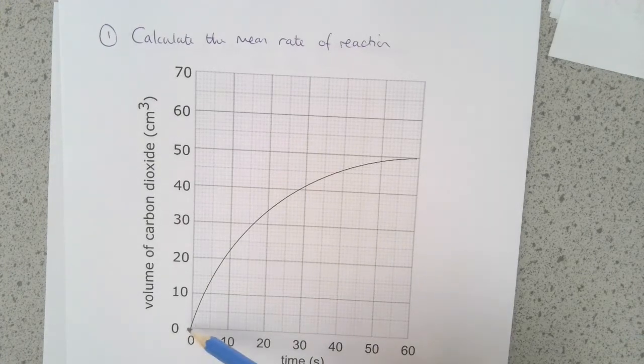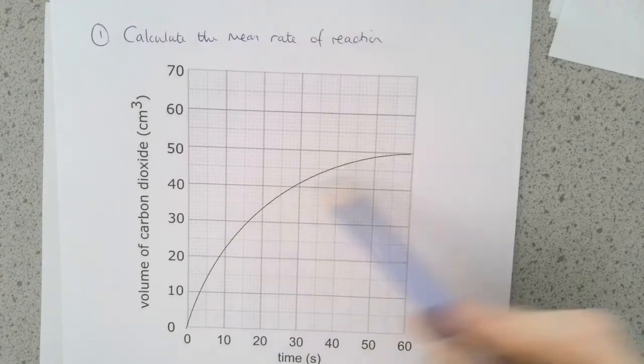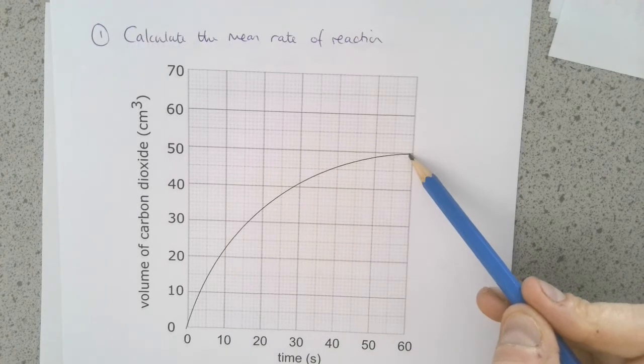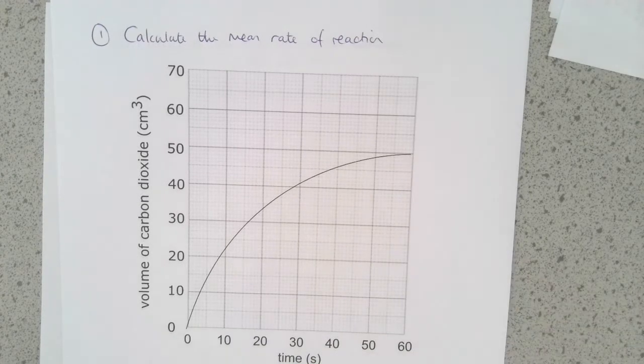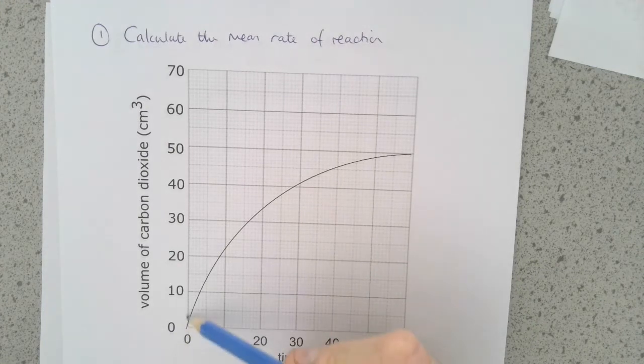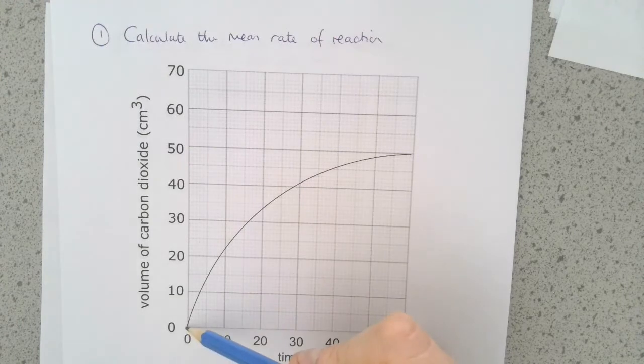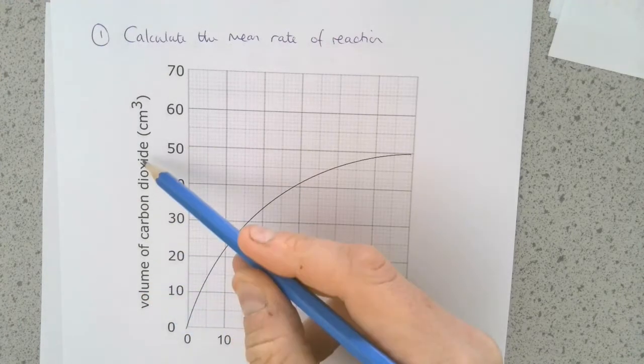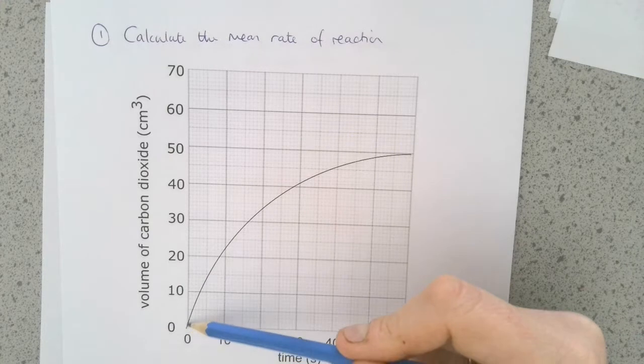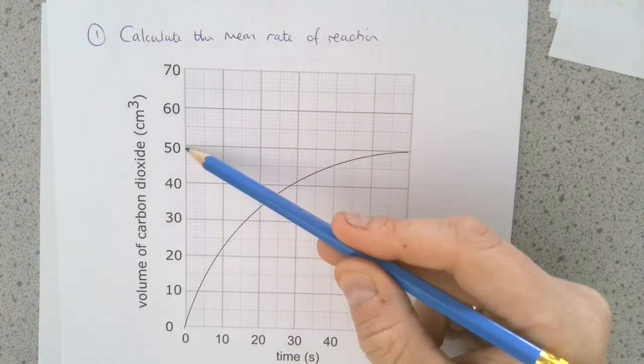This reaction starts here, and we can see it's just about finished here. All we have to do for this one is work out the total time taken and the total amount or change in the reactant or product. In this case, this is carbon dioxide being produced.